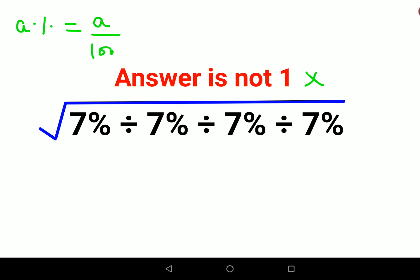So let's do it. First we'll ignore the square root. So this will be 7 upon 100 divided by 7 upon 100 divided by 7 upon 100 divided by 7 upon 100.